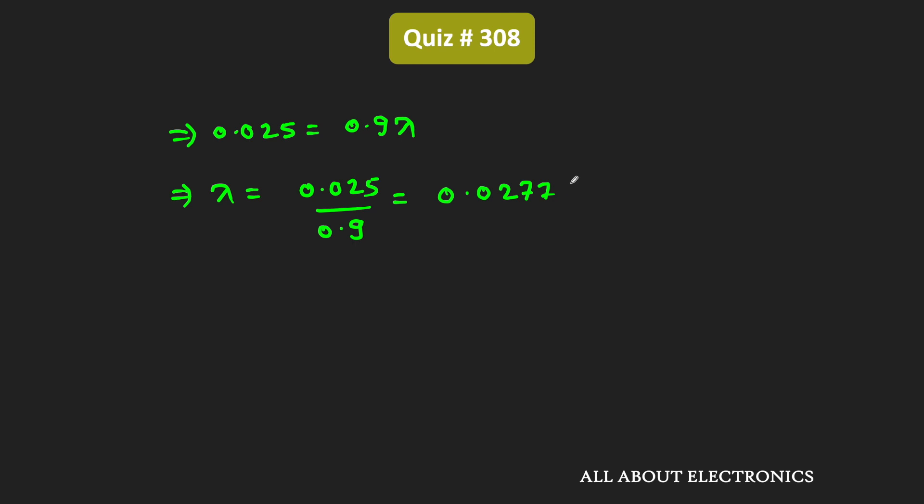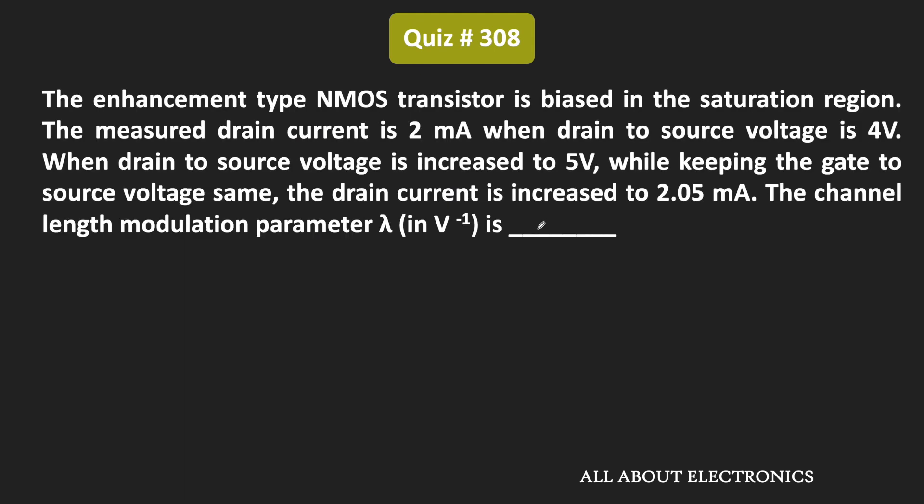And the unit of this lambda will be equal to voltage inverse. So from this, we can say that for the given NMOS transistor, the value of this channel length modulation parameter is equal to 0.0277. And hence, for the given question, the answer is 0.0277 V⁻¹.